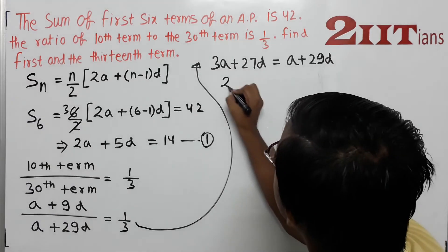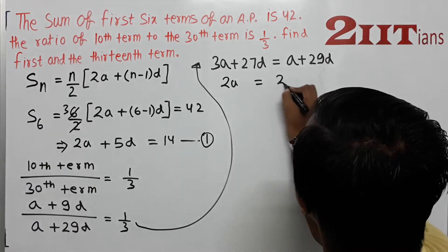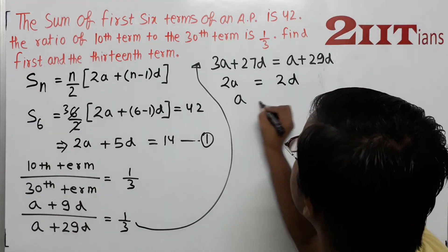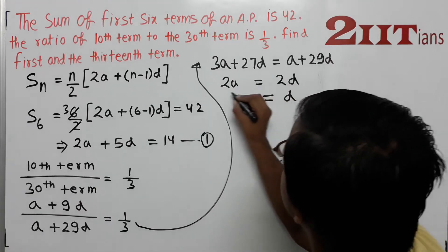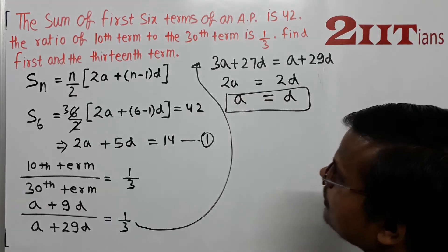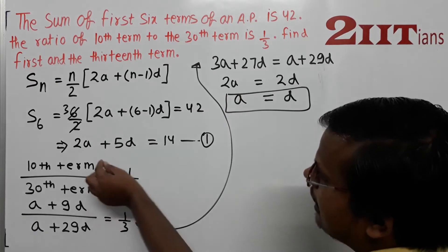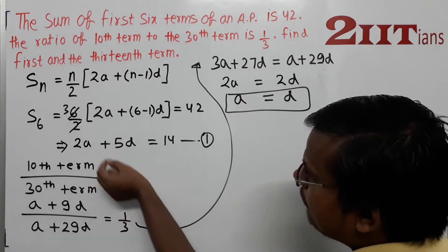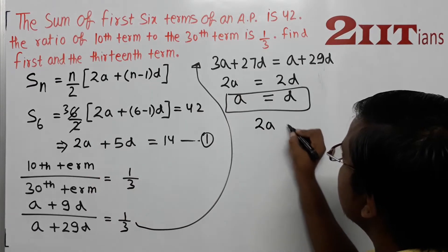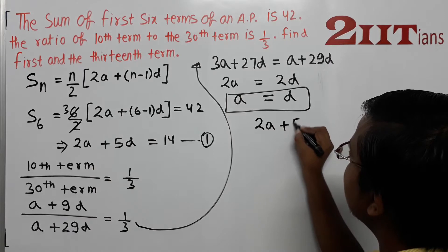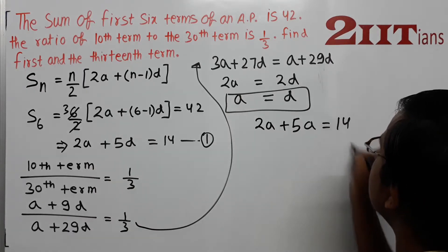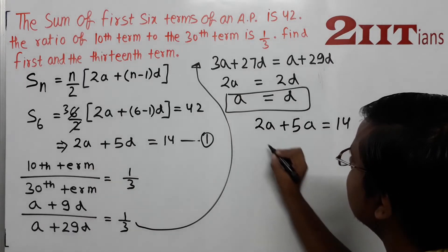From the ratio equation, 2A = 2D, so A = D. Since A and D are equal, wherever D appears we can substitute A. So substituting into Equation 1: 2A + 5A = 14, which gives 7A = 14.